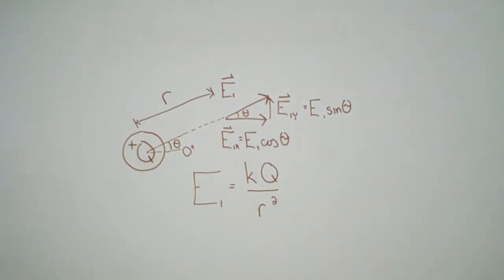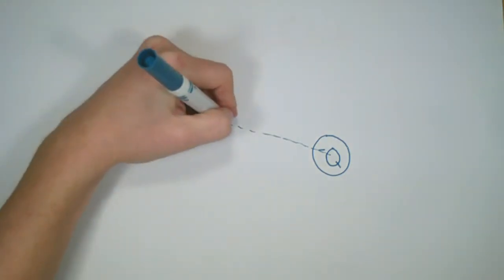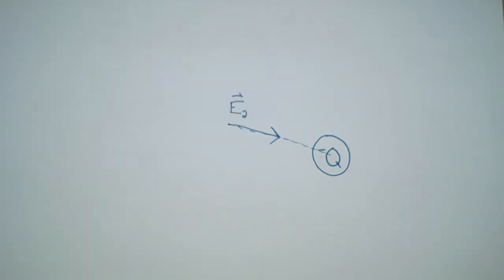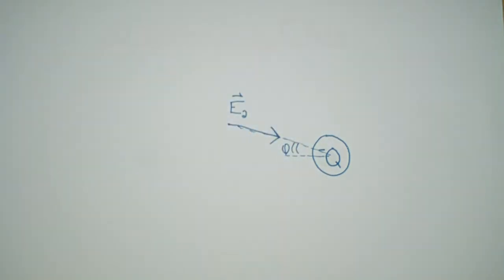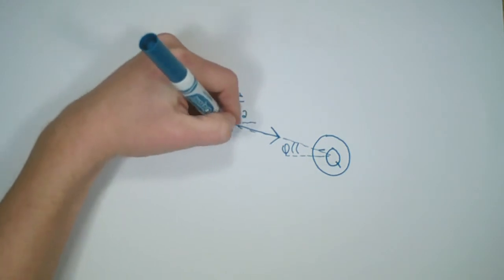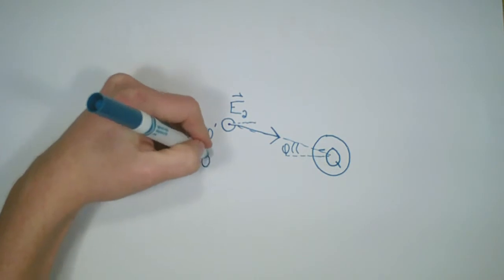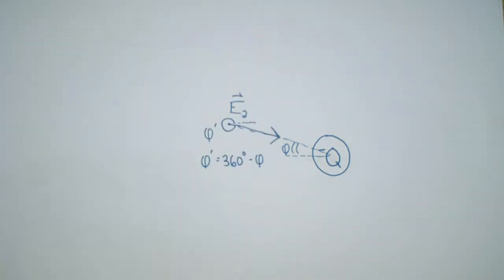Once we have E1, we consider E2. We connect a straight line from the point of interest to the negative charge — this defines E2. As labeled before, there's an angle phi. The angle at which E2 points, directed into quadrant 4, is phi prime, where phi prime equals 360 degrees minus the angle phi.